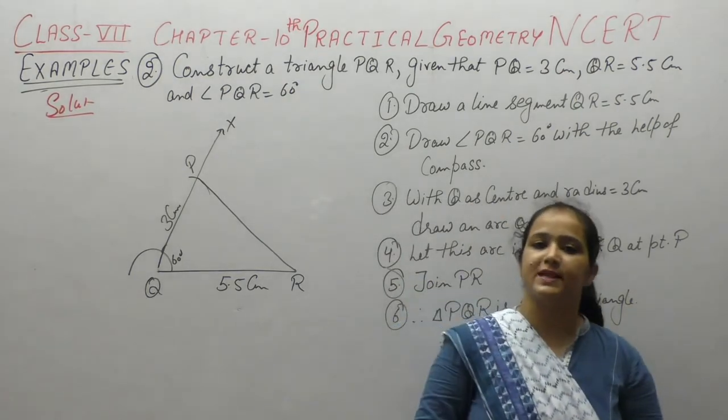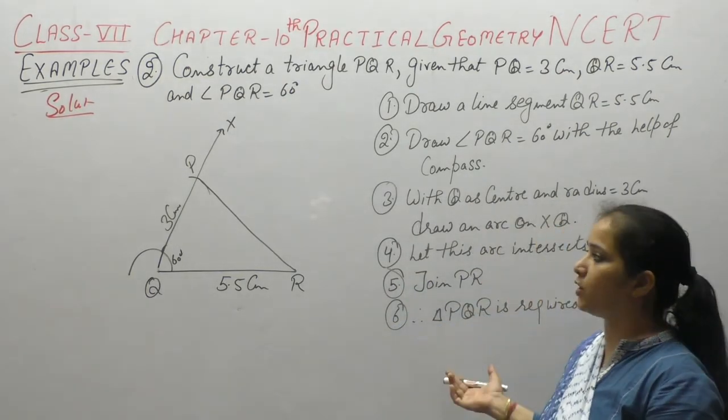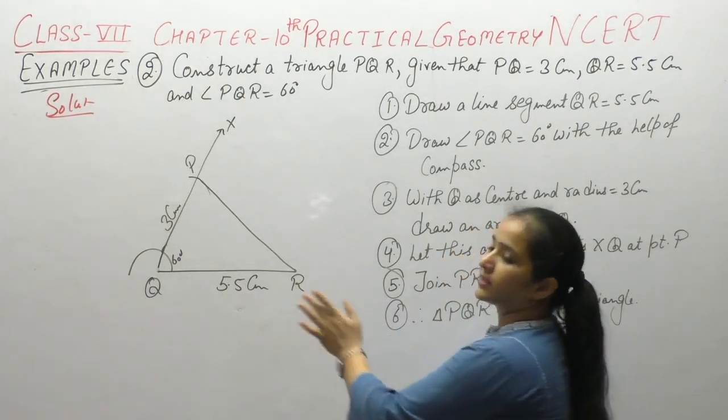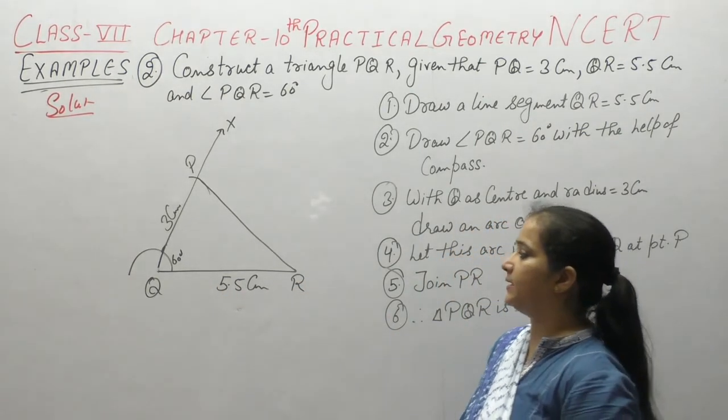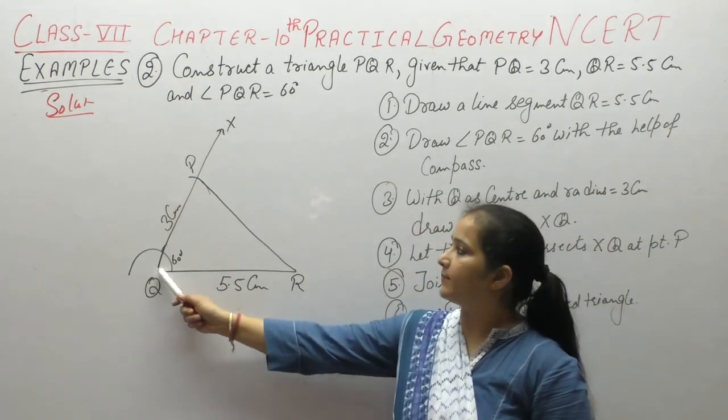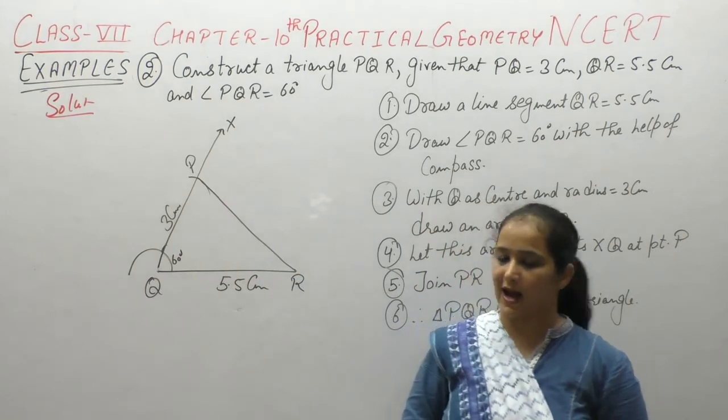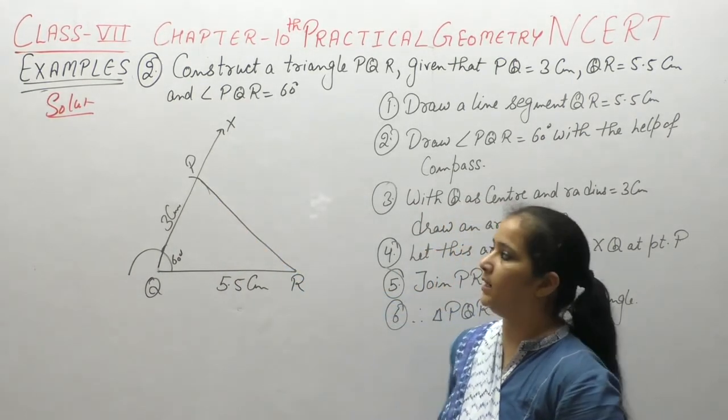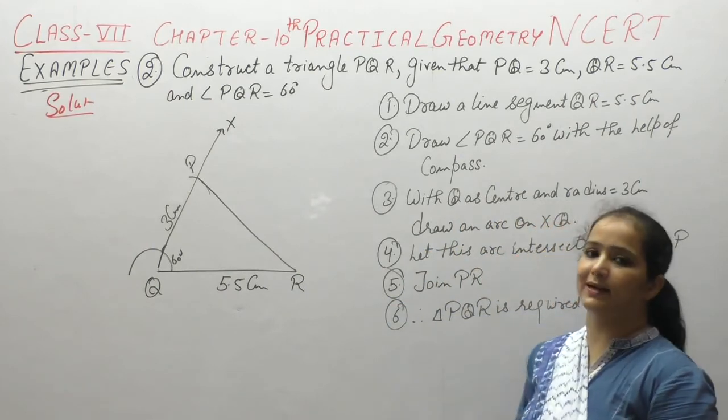Easy, easy hai. Jo steps construct kar rahe ushi ko hum ne language mein likha hai. Sab se pehle QR draw kiya 5.5 cm, Q peh angle draw kiya 60 degree, Q ko center maan ke 3 cm ki ek arc lagai, usse naam diya P, P se R ko join kiya. So PQR is the required triangle.